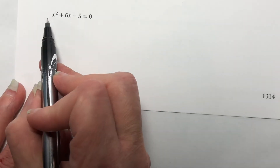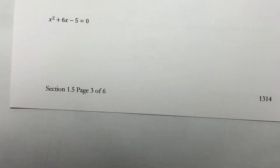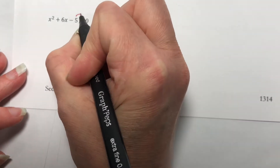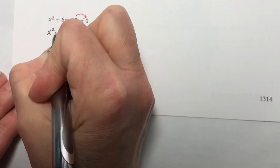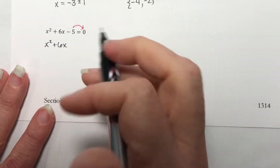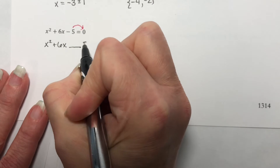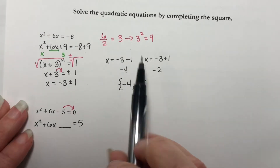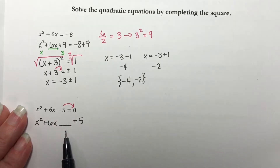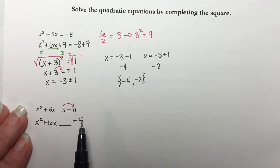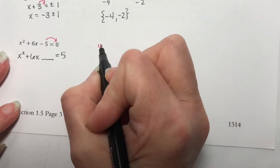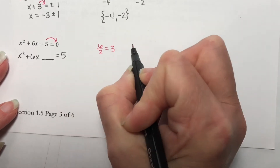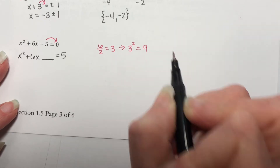Our first step is to divide everything by a — a is a 1, so we don't have to worry about anything. Our next step is to move the 5 over so that we have a constant alone. So I have x squared plus 6x. What I normally do when I have to move this over is I leave myself a blank, because our next step is going to be to add the magic number — it saves a recopying step. So let's calculate that magic number: we take the number in front of x, which is 6, divide it by 2, which is 3, and then square it to get 9.